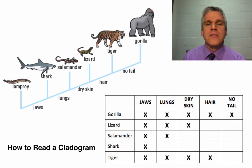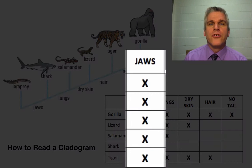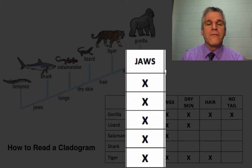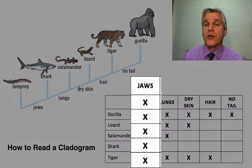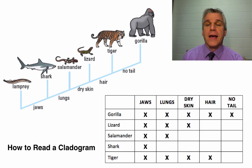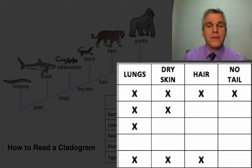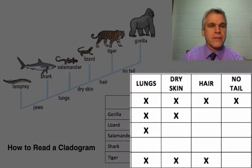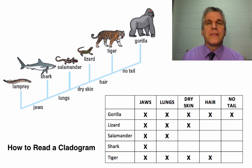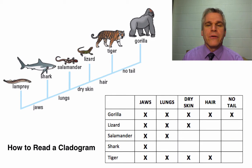For instance, if we look in the jaws column, all five of those individuals have jaws. If you look at the lungs, four of them have lungs. Three have dry skin, two have hair, one does not have a tail. How do we take this information and put it into a cladogram?